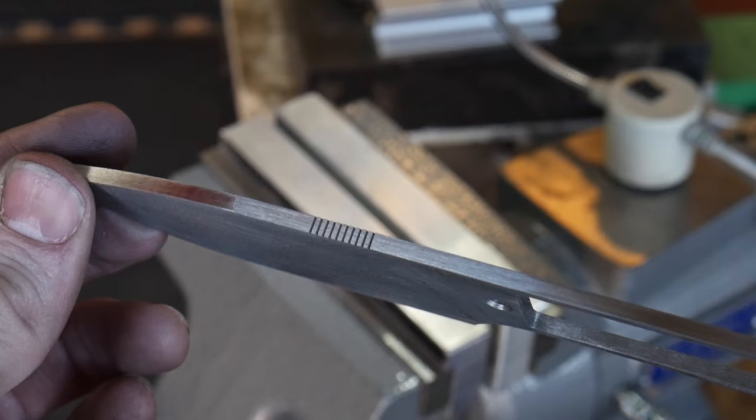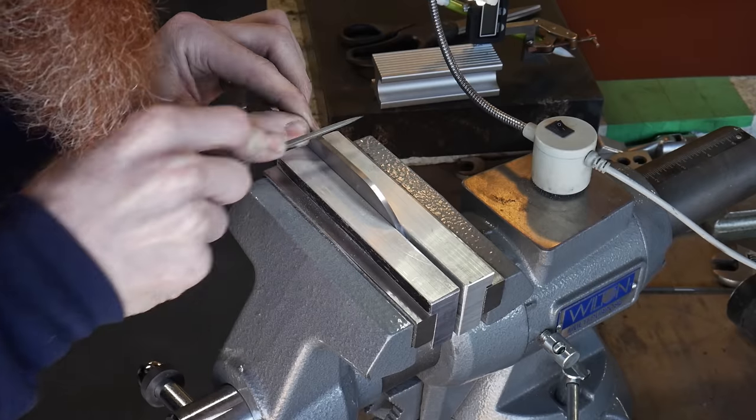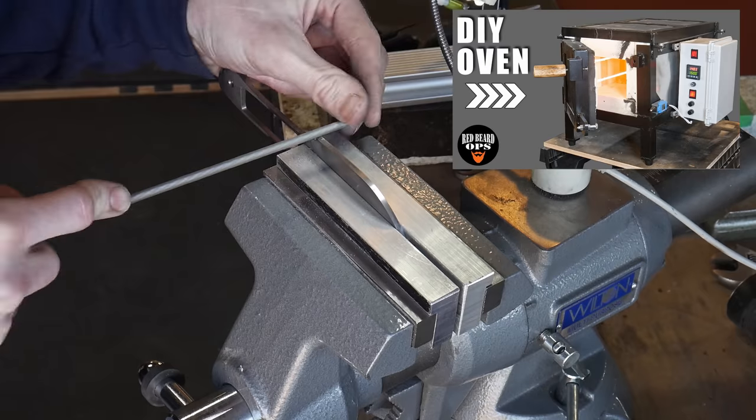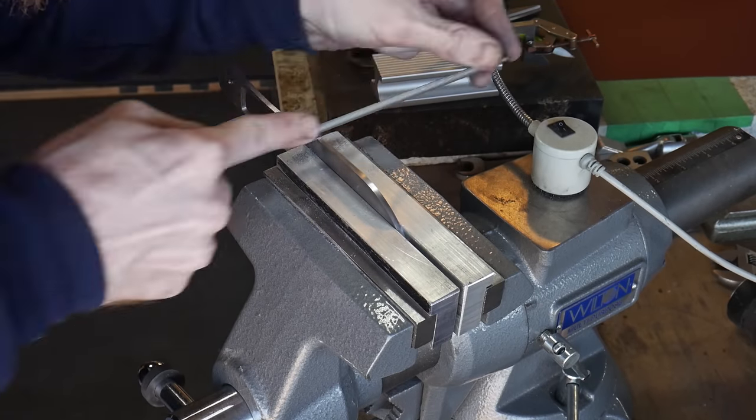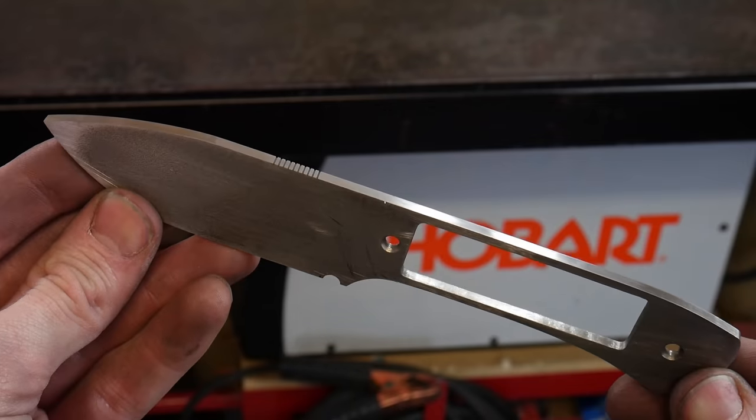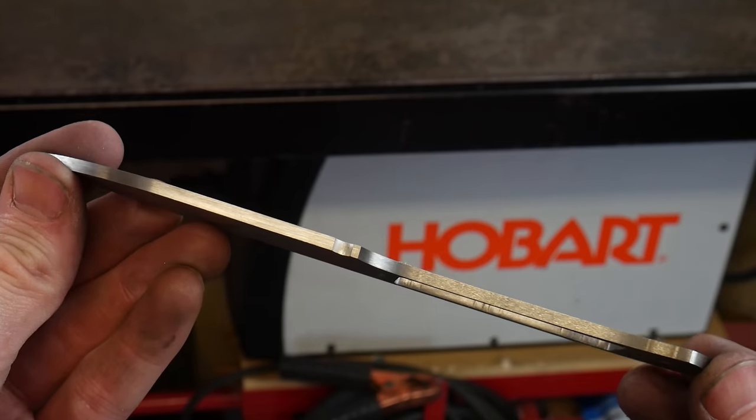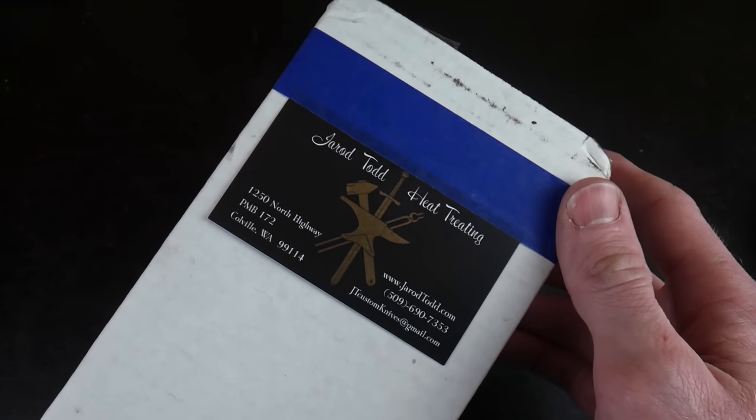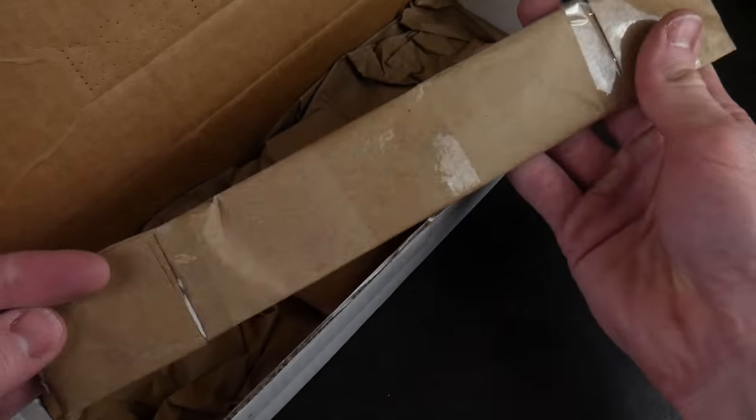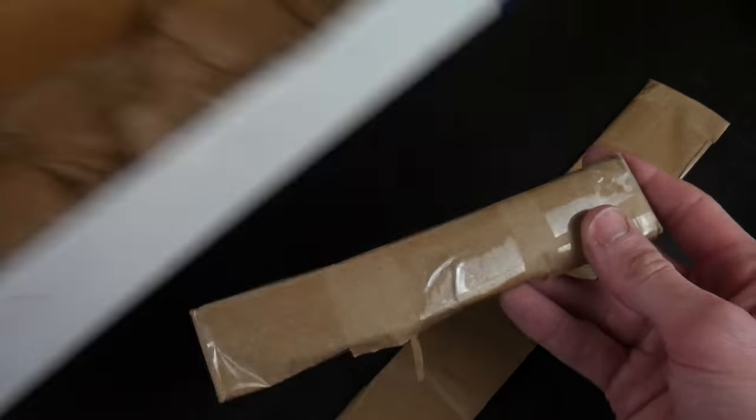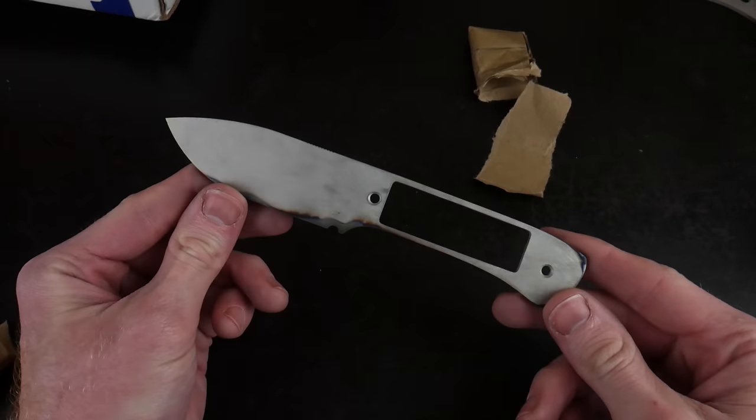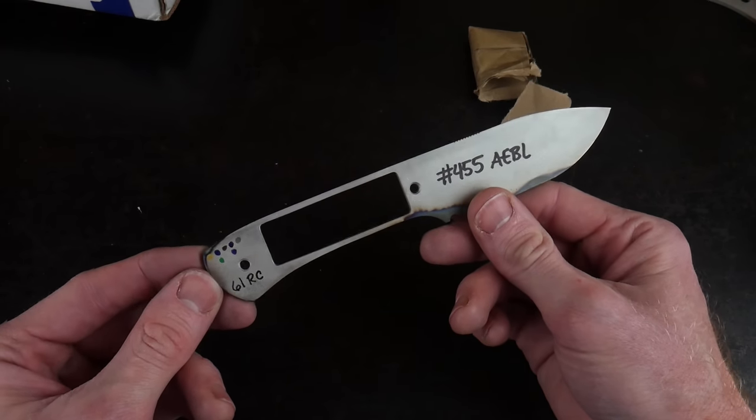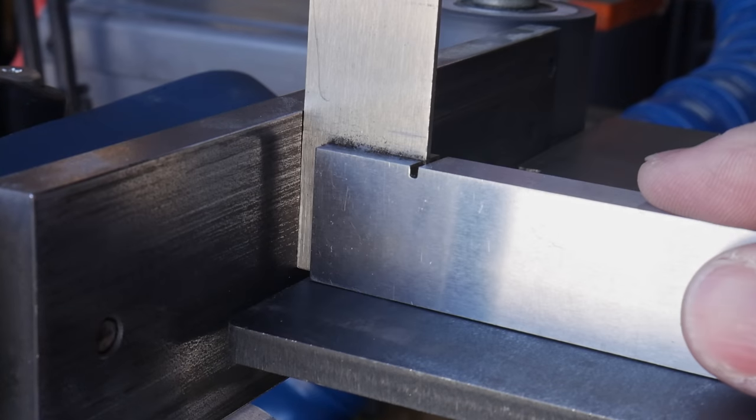Now I actually started this project a long time ago, so I will not be heat treating this knife with my DIY heat treating oven that we recently built on the channel. Since it's a stainless steel blade, heat treating it in the forge is not feasible. For this reason, I sent it off for professional heat treatment by Jared Todd. He does excellent work and I highly recommend him for those of you looking to get into knife making but who are intimidated by the heat treating process. I requested Jared heat treat this blade to a 61 Rockwell hardness, which he verified with his hardness tester. Since Jared uses stainless steel foil to wrap the blade during heat treatment, there is very little scale to contend with.